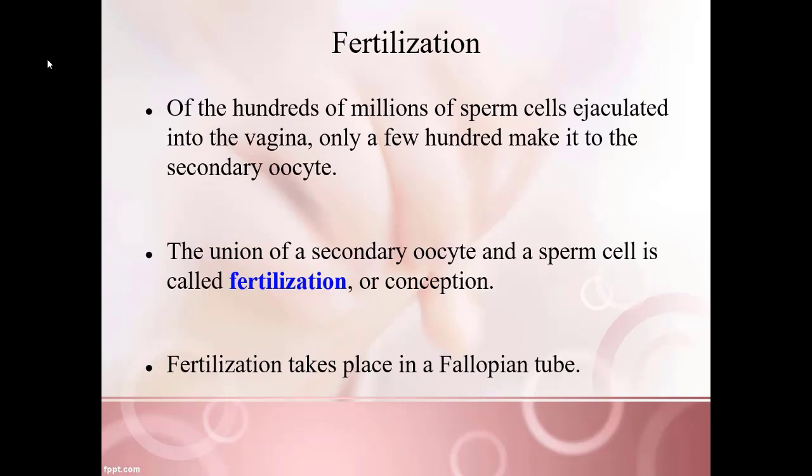The first part we'll discuss is fertilization. When the male ejaculates, there can be anywhere between 40 million and 600 million sperm cells. Even though those are really high numbers, only a couple hundred at most will make it anywhere near the secondary oocyte, because so many are lost almost immediately once they enter the vagina. From there, they have to swim up the uterus and choose the correct path to find the secondary oocyte.